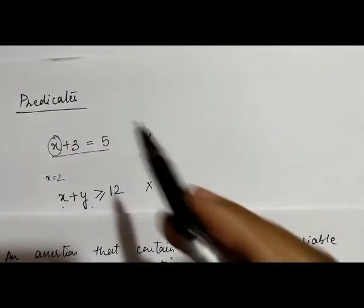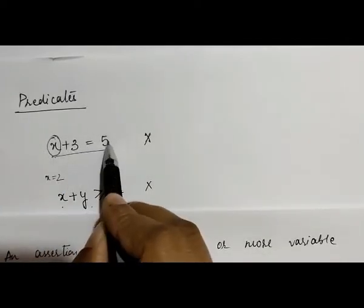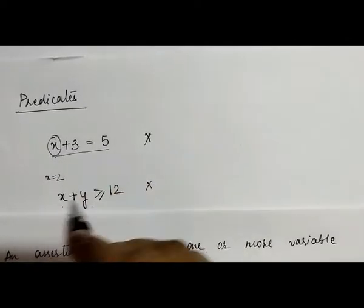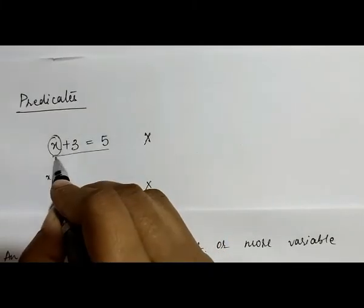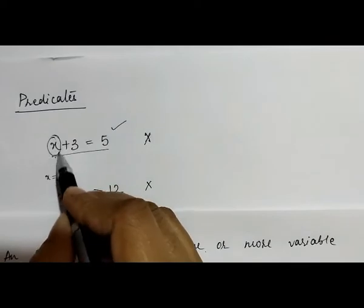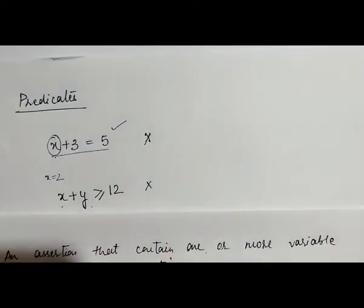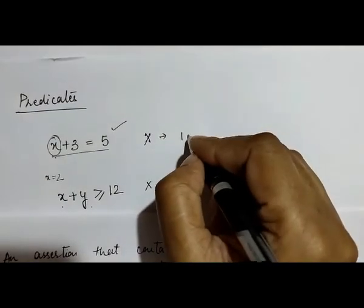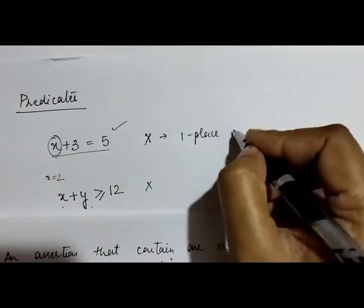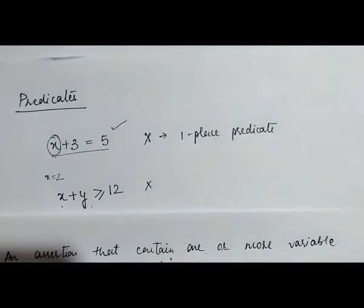For example, for this particular statement, right now this is not a proposition. But if I assign any value to this variable x, then it becomes a proposition. How many values are we assigning to the variable? Only one. So this is one place predicate, because we are assigning a single value to the variable x.